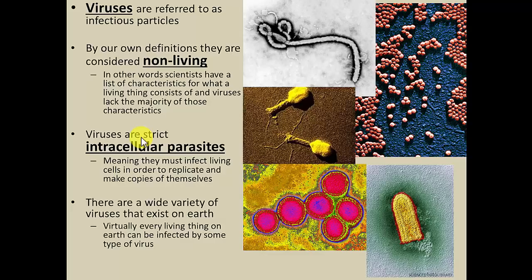Last but not least are the viruses. Viruses are one of the more interesting groups, and that has to do with the fact that they're actually a bit of an outlier from the other microbes in that they're technically considered non-living. Viruses are referred to as infectious particles. Scientists put together a list of what a living thing is — the characteristics that make up a living thing — and when viruses were later discovered through more advanced microscopic techniques, scientists realized they don't fit the description of previously discovered life forms.